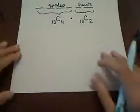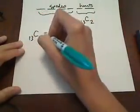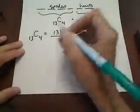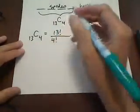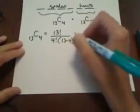So let's go ahead and do the calculation. You can either use your calculator. I'm going to go ahead and just do them using the formula. So this is going to be 13 factorial over 4 factorial times 13 minus 4 factorial.